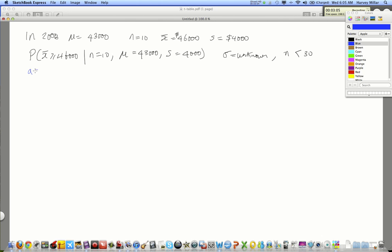Well, the assumptions, whenever we want to use the t-distribution, would include, one, the population is normally distributed. All right, and then the sample is randomly chosen.